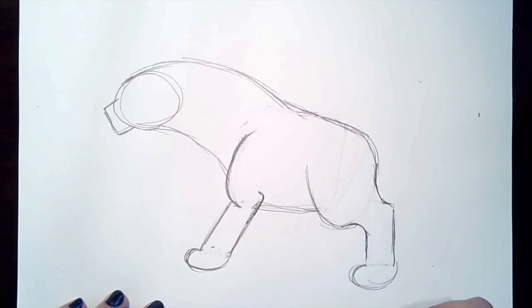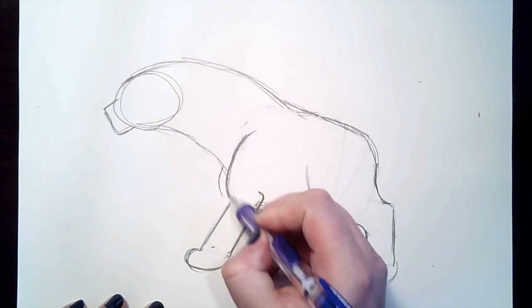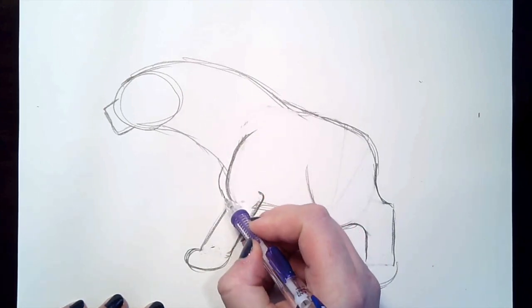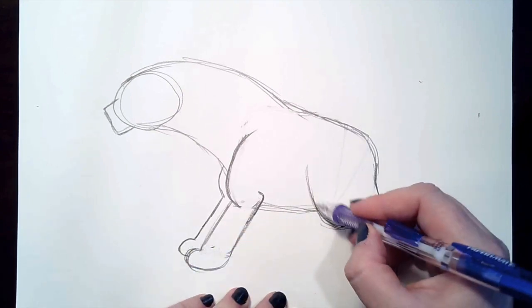And now we're looking pretty good. So for the other legs, you can go ahead and mirror the same outline. Just make sure it's a little bit shorter. We'll do the same on this side.